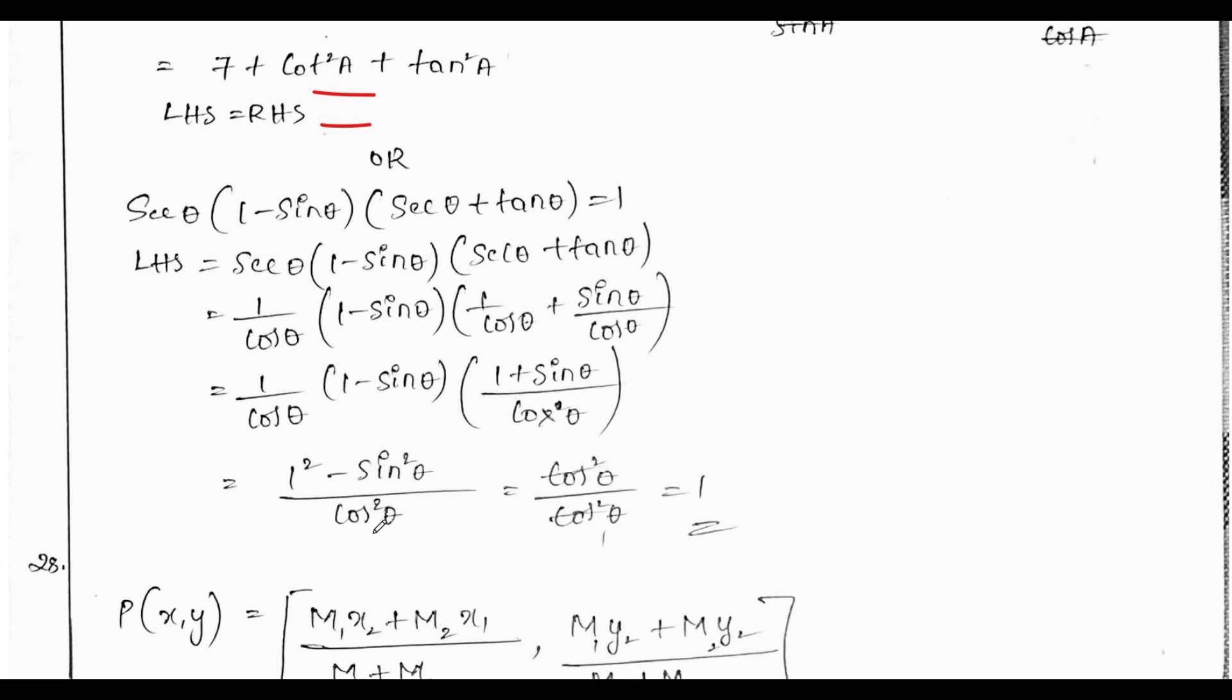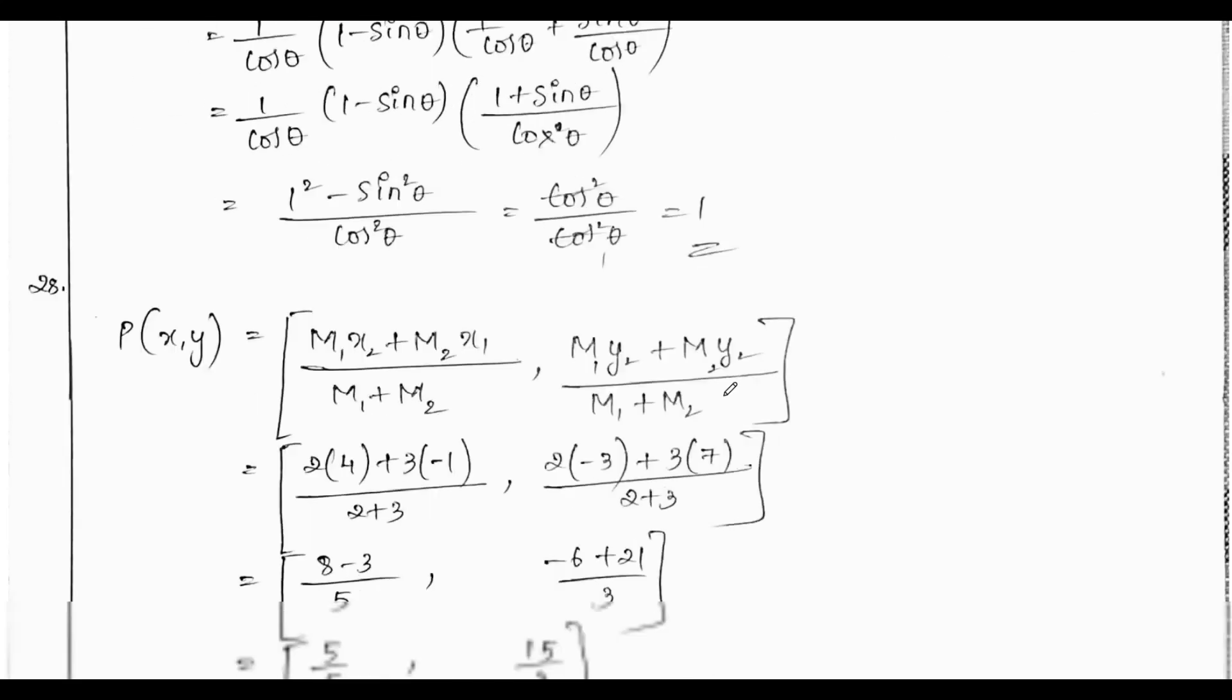Secant theta into 1 minus sin theta, secant theta plus tan theta. Converting secant theta as 1 by cos theta and tan theta as sin theta by cos theta, we can prove RHS equals 1.